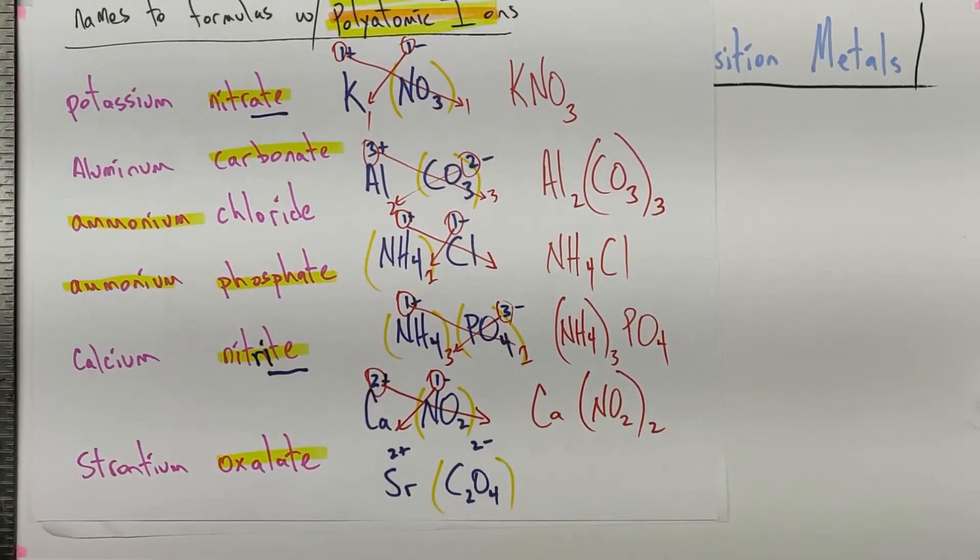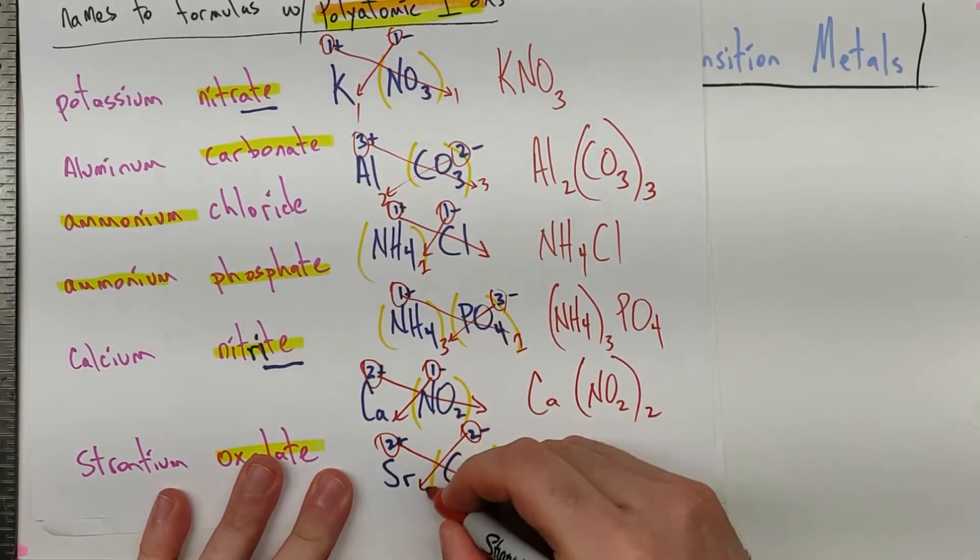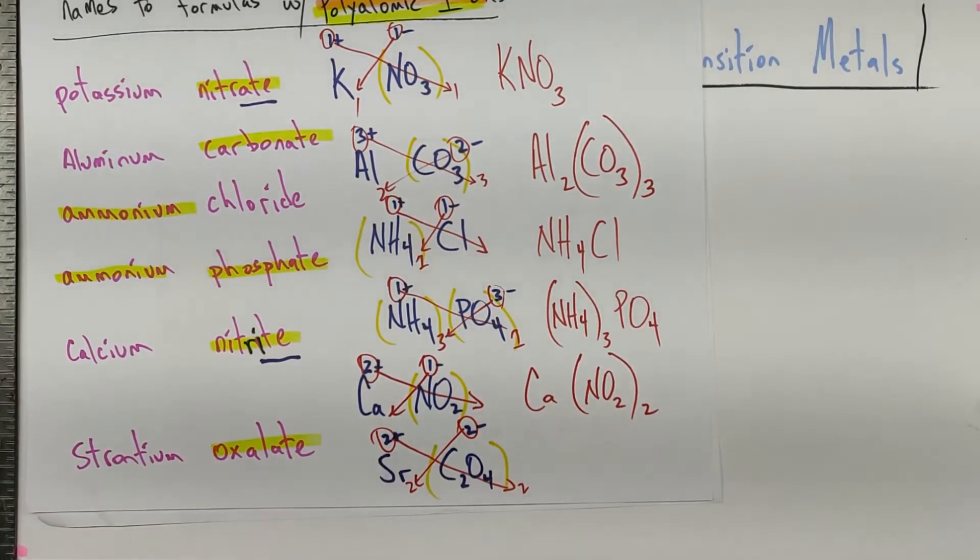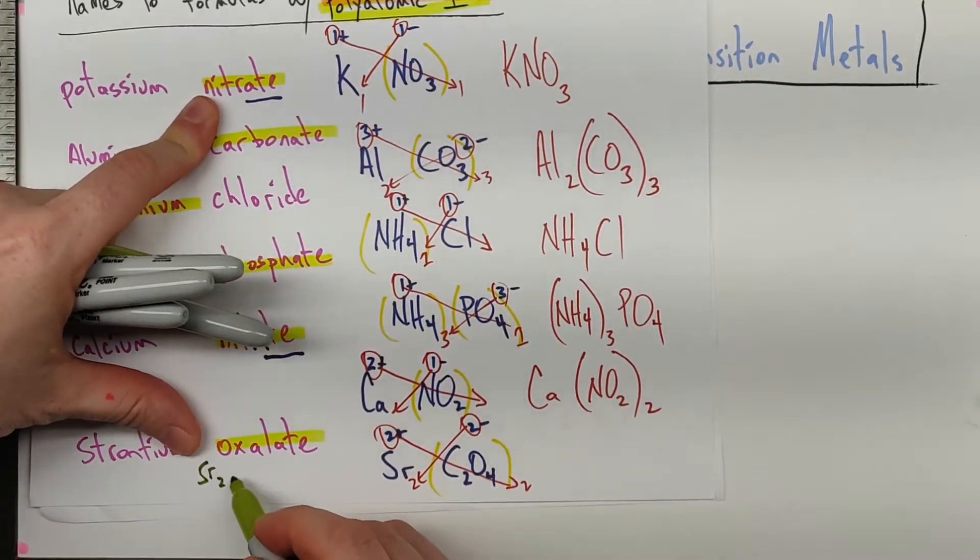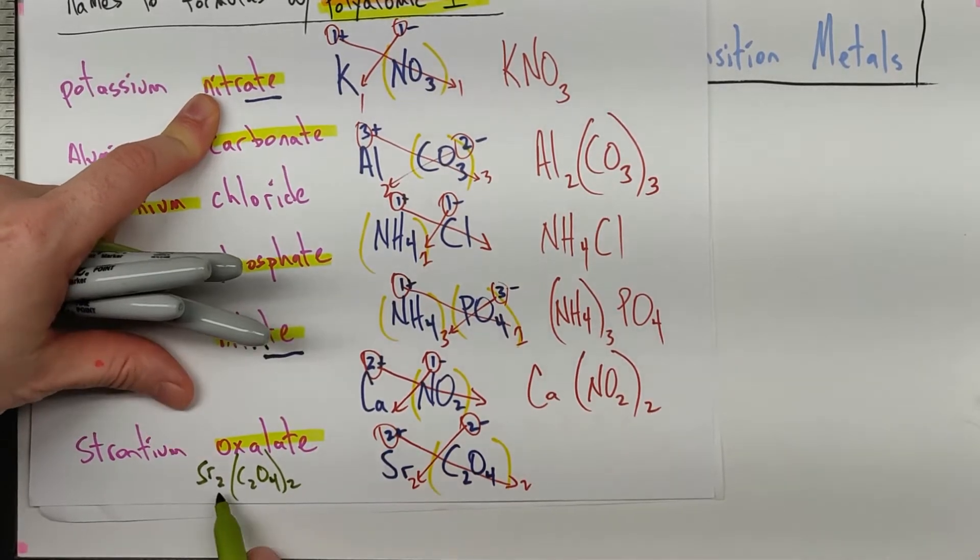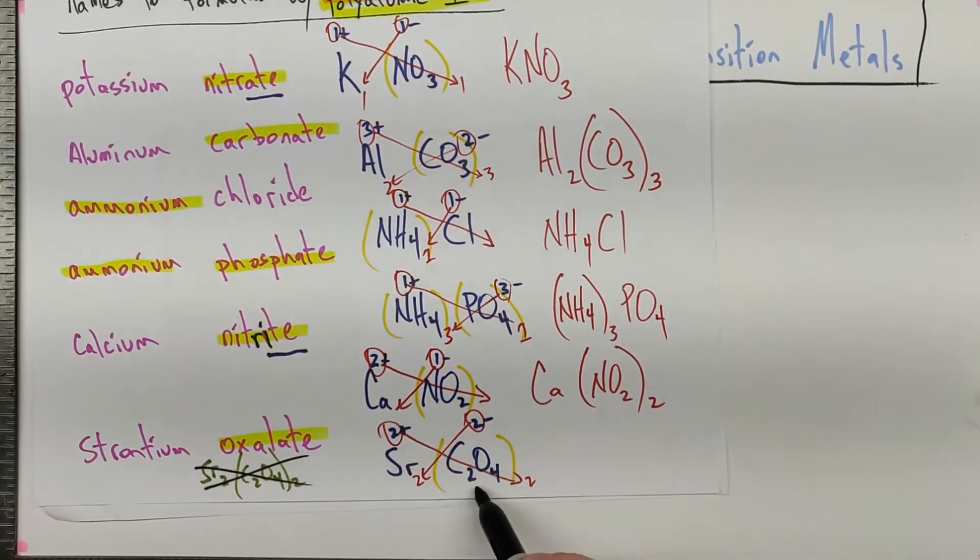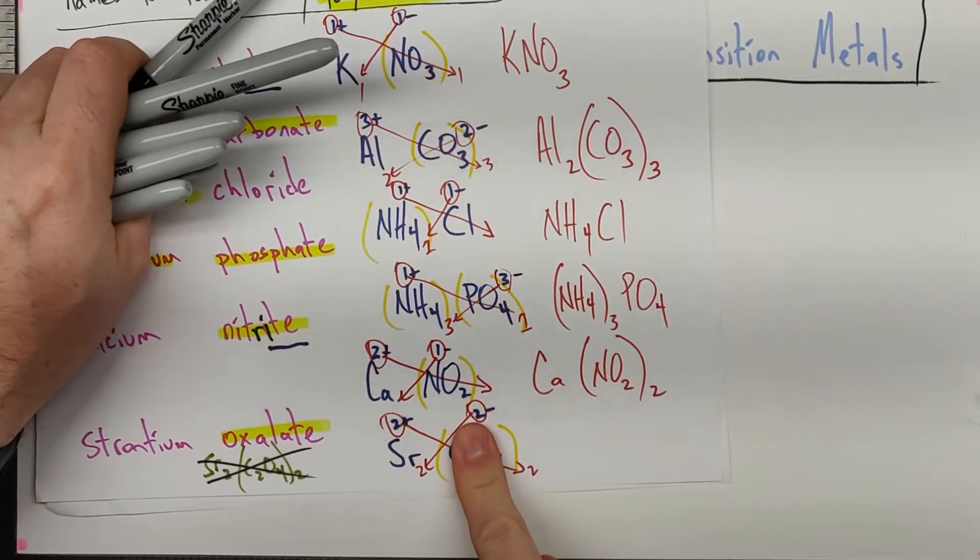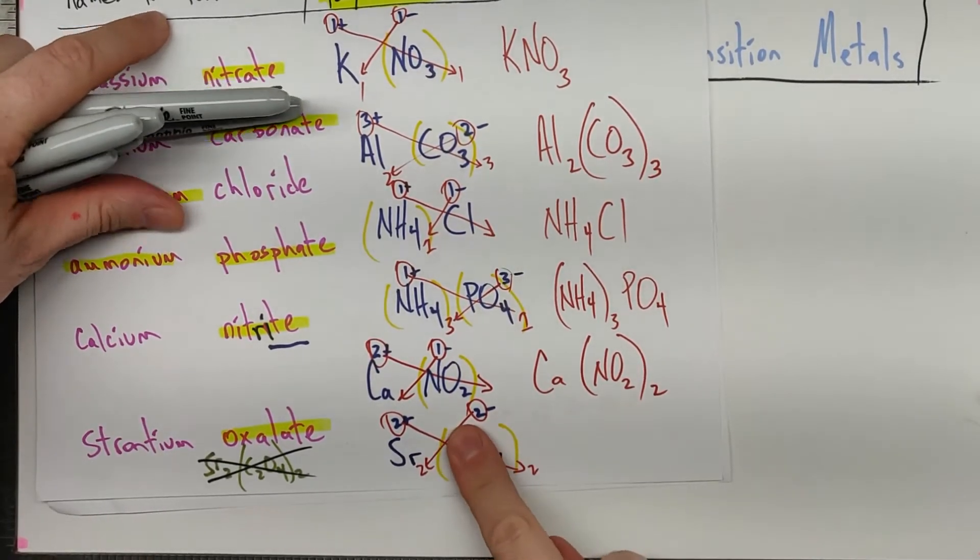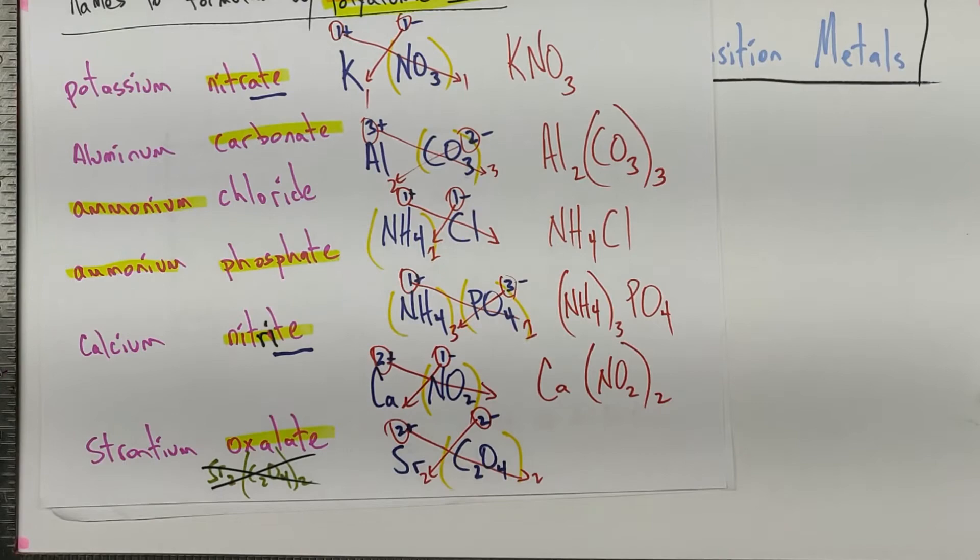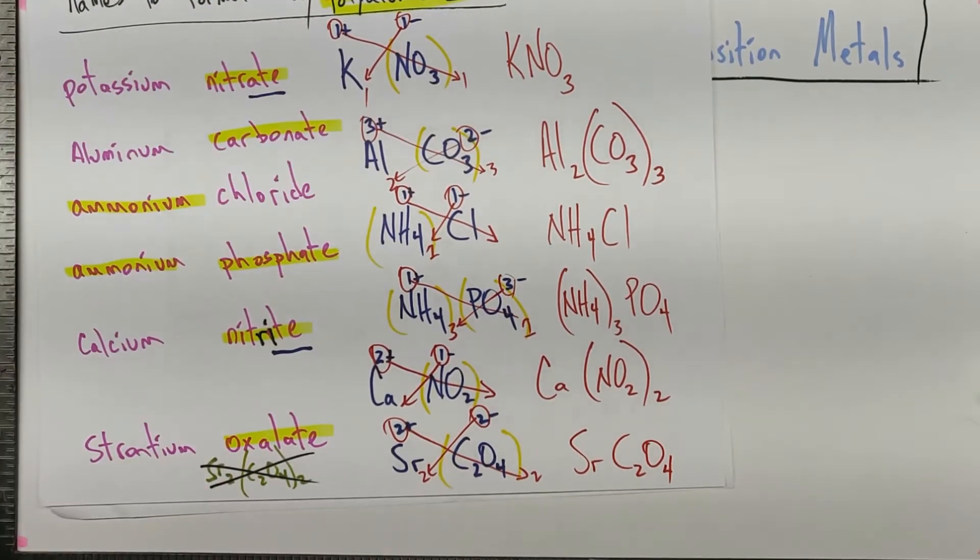Parenthesis, parenthesis. And then when we bring those charges down, you'll notice we have a two and a two. And you could write that as some intermediate. Sr2(C2O4)2. But you can quickly see that that two and that two are going to cancel out. We're not messing with C2O4. Just putting your finger over it, I have two of whatever is under my finger. I can't change the stuff that's under there. That's set in stone. I can only change the stuff that's on the outside. So we would end up with SrC2O4. And that is strontium oxalate.